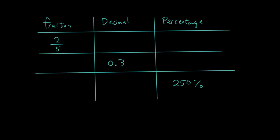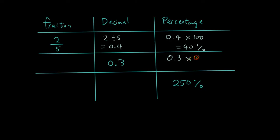So now I want you to fill in the blanks — try it out and come back when you're done. Fraction convert to a decimal: 2 divided by 5 — top number divided by bottom number, numerator divided by denominator — and you should get 0.4. Then 0.4 converted to a percentage: times it by 100 is 40%. Now we have a decimal: 0.3 times 100 is 30%. Convert it to a fraction: it's 3 out of 10, because there is one number after the decimal point.